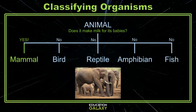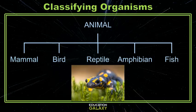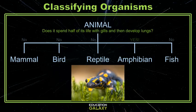What about something more obscure? Let's look at a salamander — kind of weird and slimy looking, but look at that cute smiling face. These guys start out their life cycle in the water with gills. And then as they get older, they develop lungs and breathe air. That means they must be amphibians.